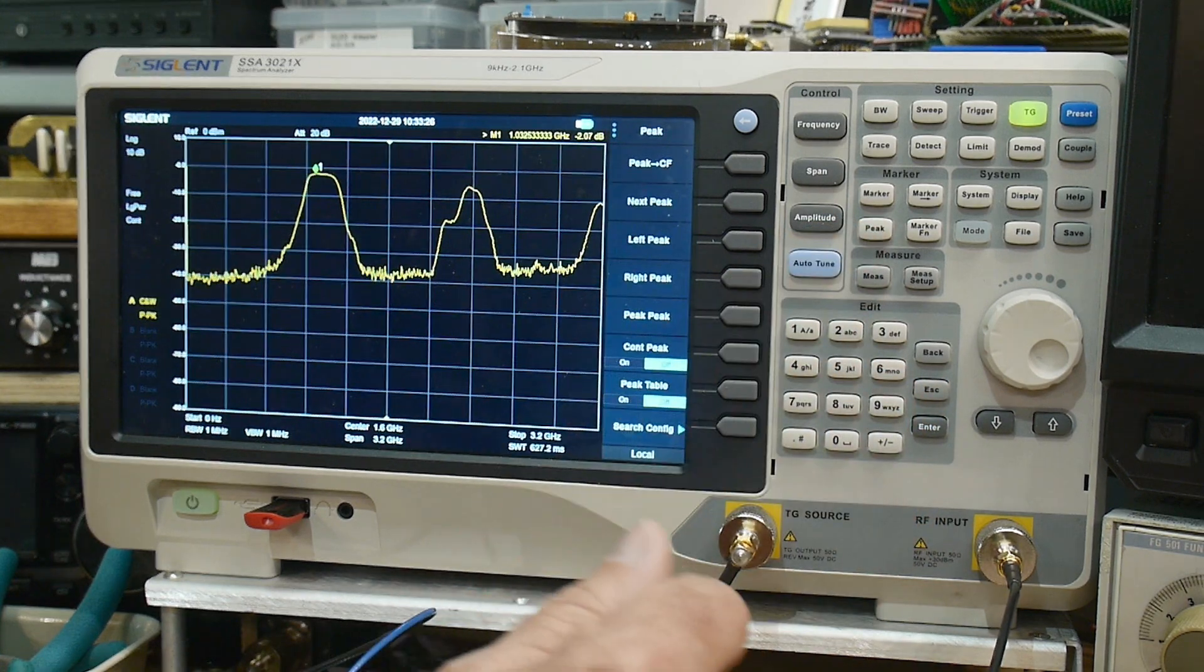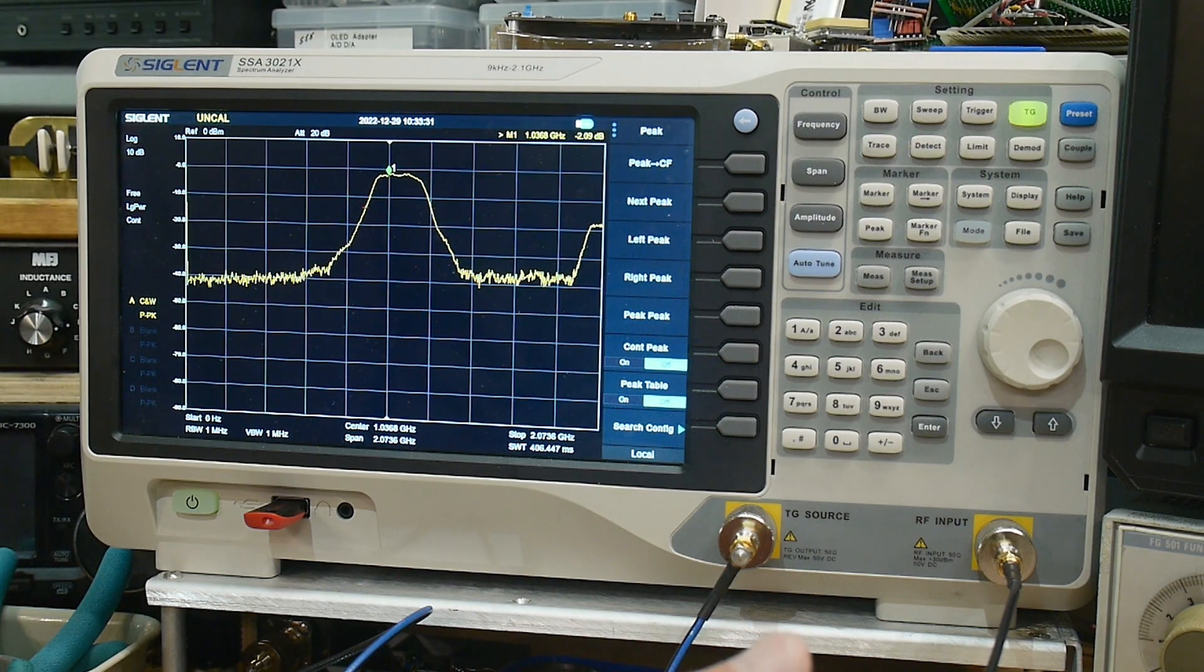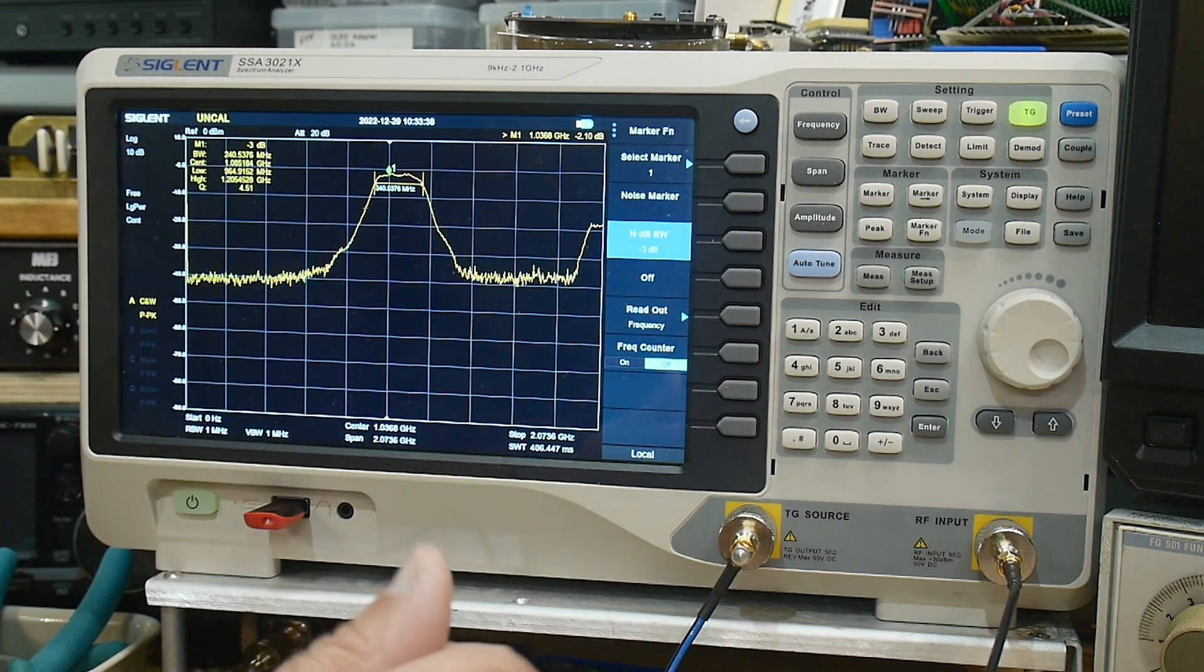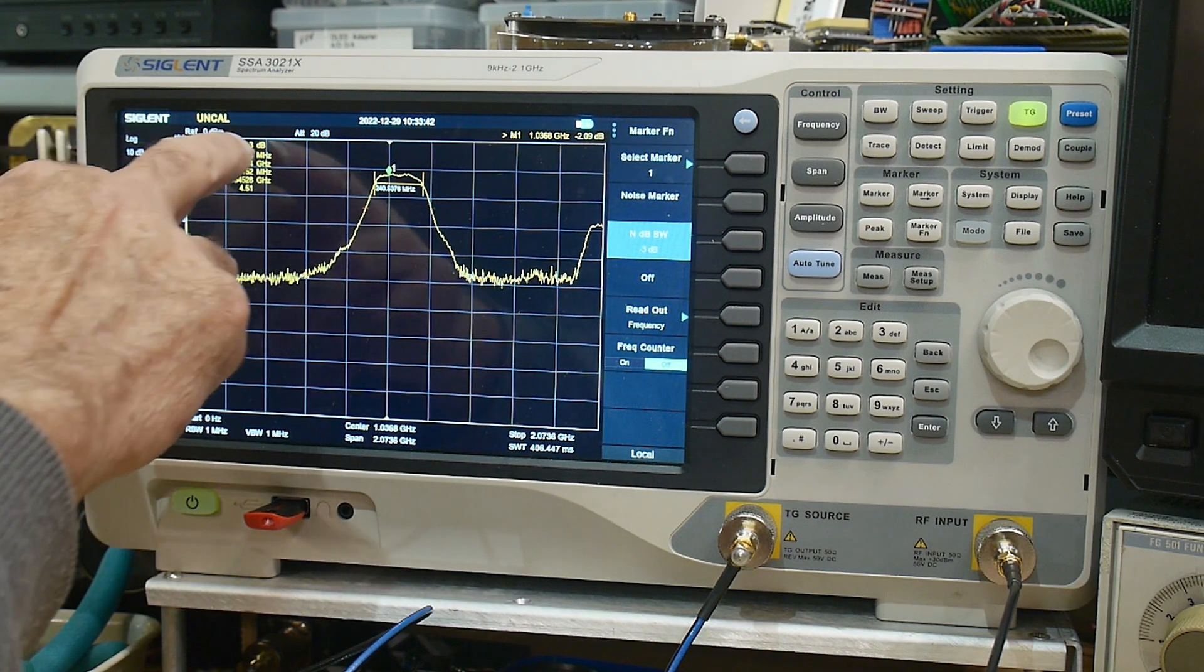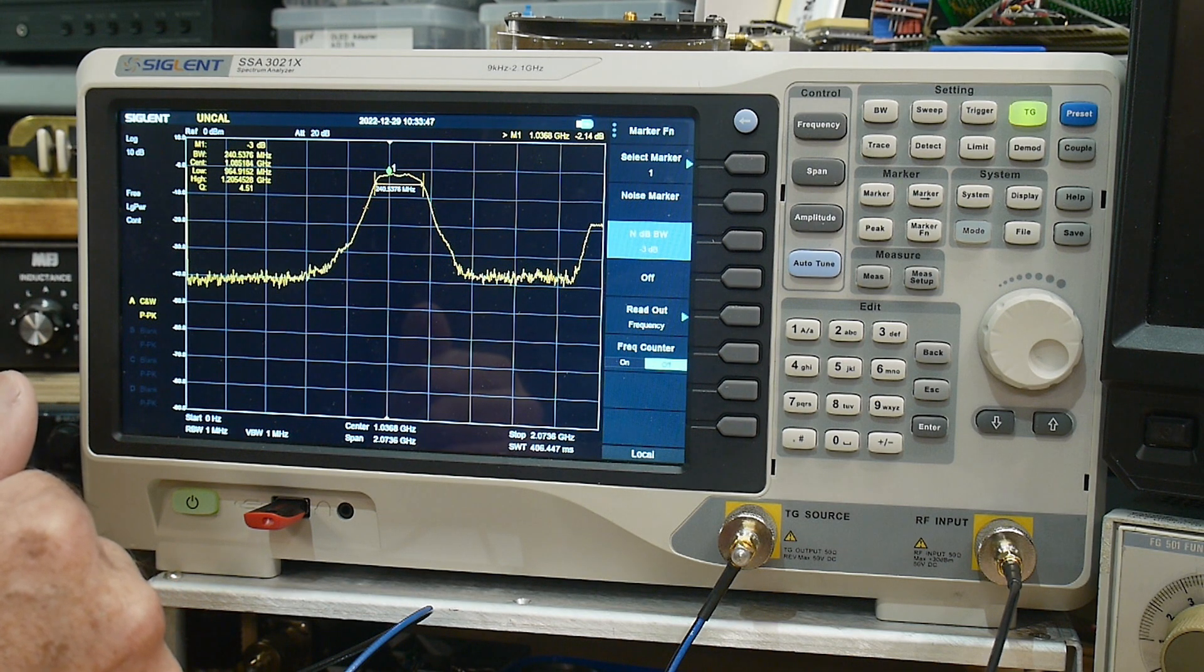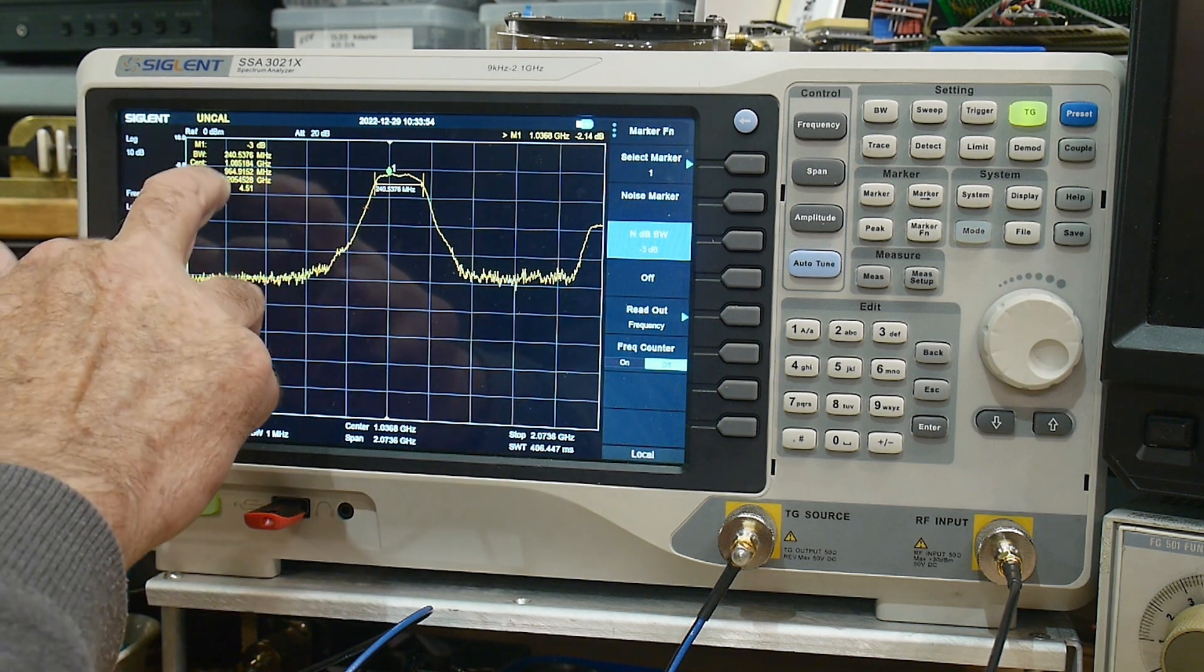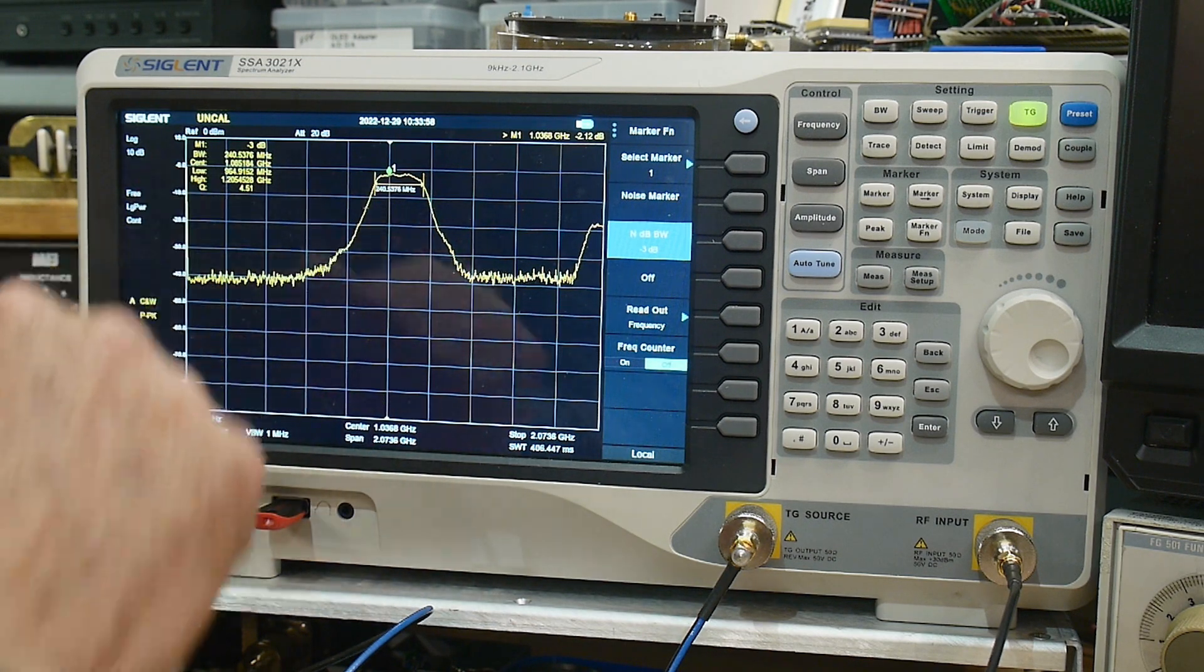We can do a peak on that. We will do peak to center frequency, there is our nice filter. And then we can say what is the 3dB point, and it's 240 megahertz wide. Center frequency is about one gigahertz, hey a good guess, 1.085 gigahertz. I'm not exactly sure what this was designed for. The low frequency is 964 megahertz and the high frequency is 1.2 gigahertz.